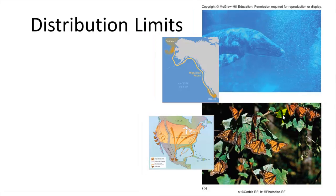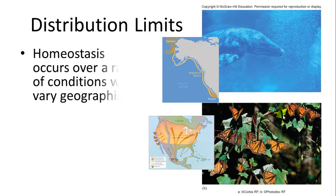A population has a limit on its distribution, and those limits are based on the organism's homeostatic balance. Homeostasis — the ability for an organism to survive, reproduce, and function — occurs over a range of conditions that vary geographically, and that range can be very large.